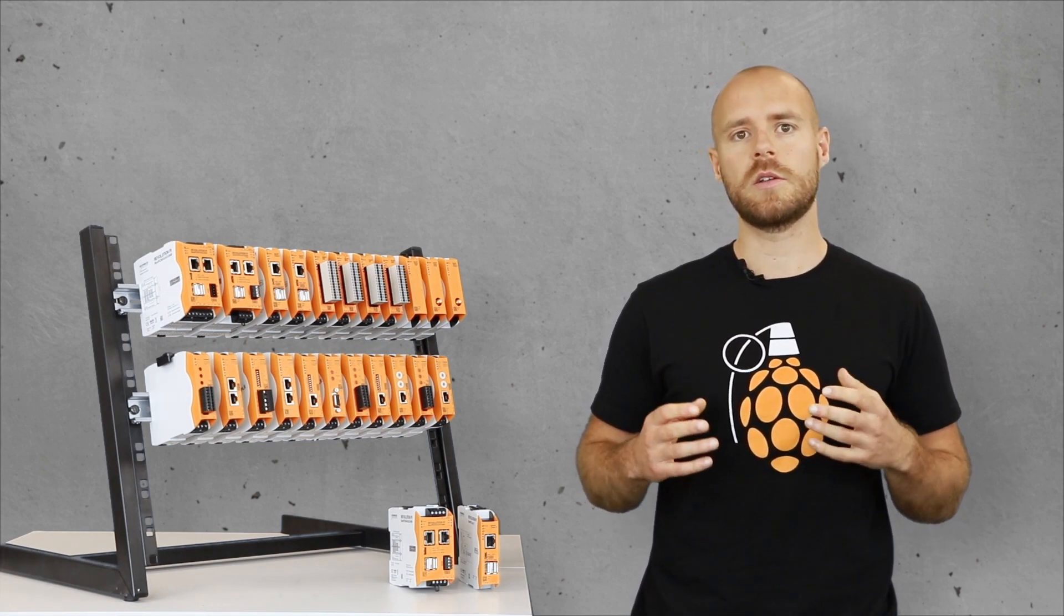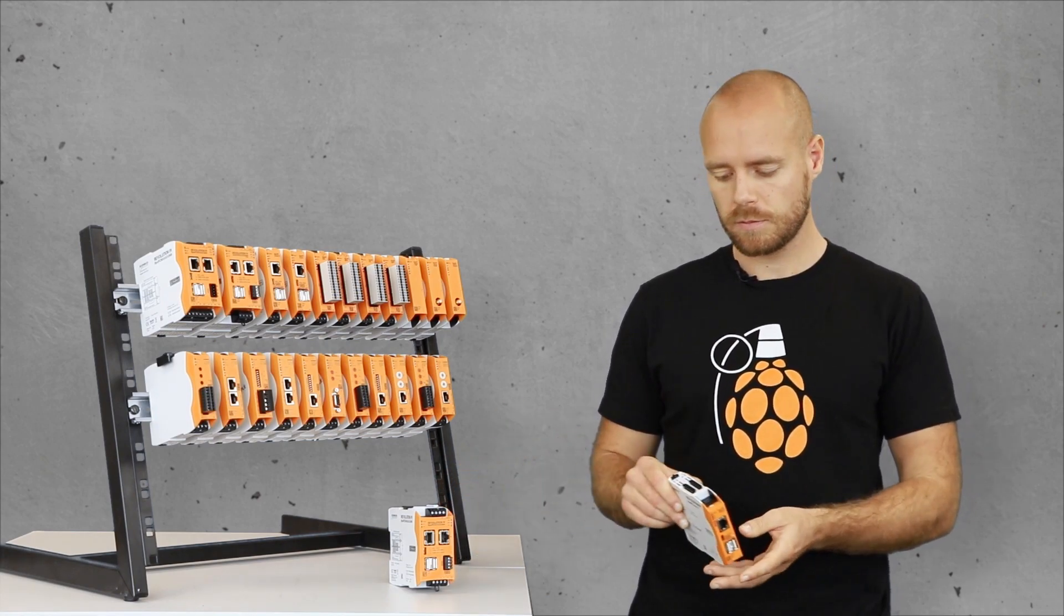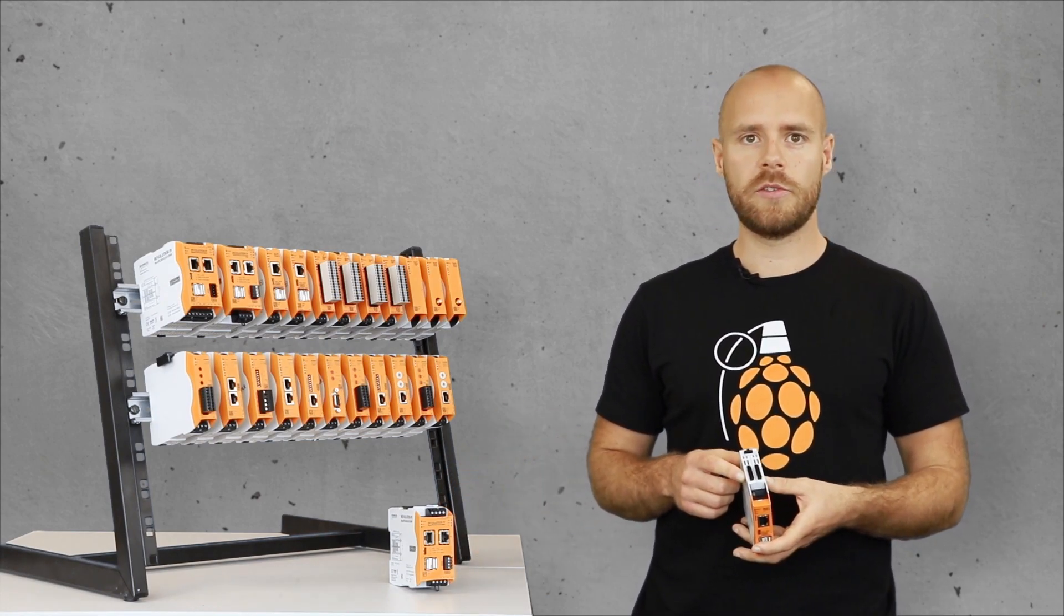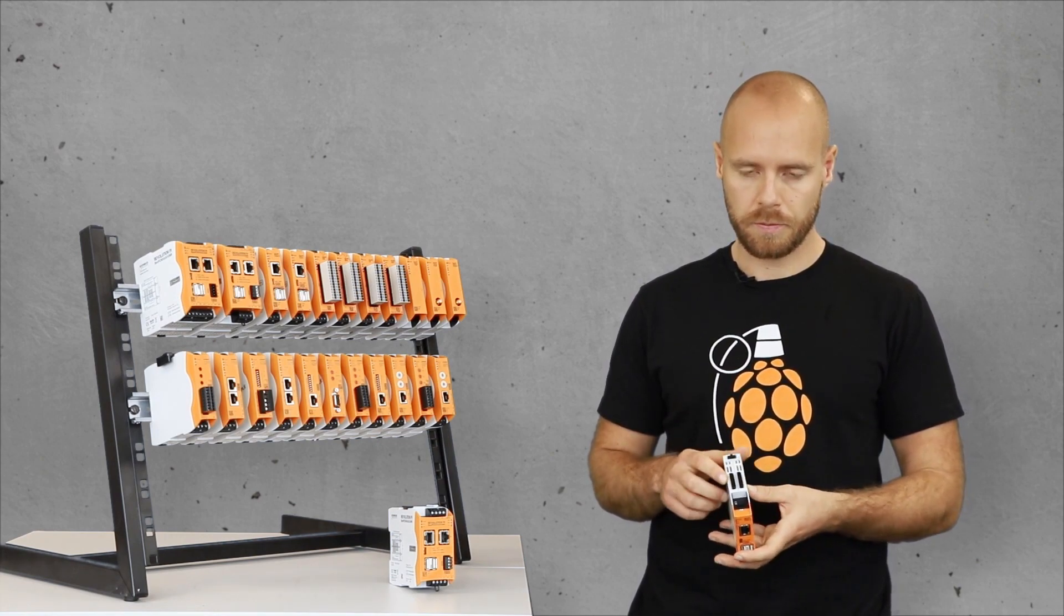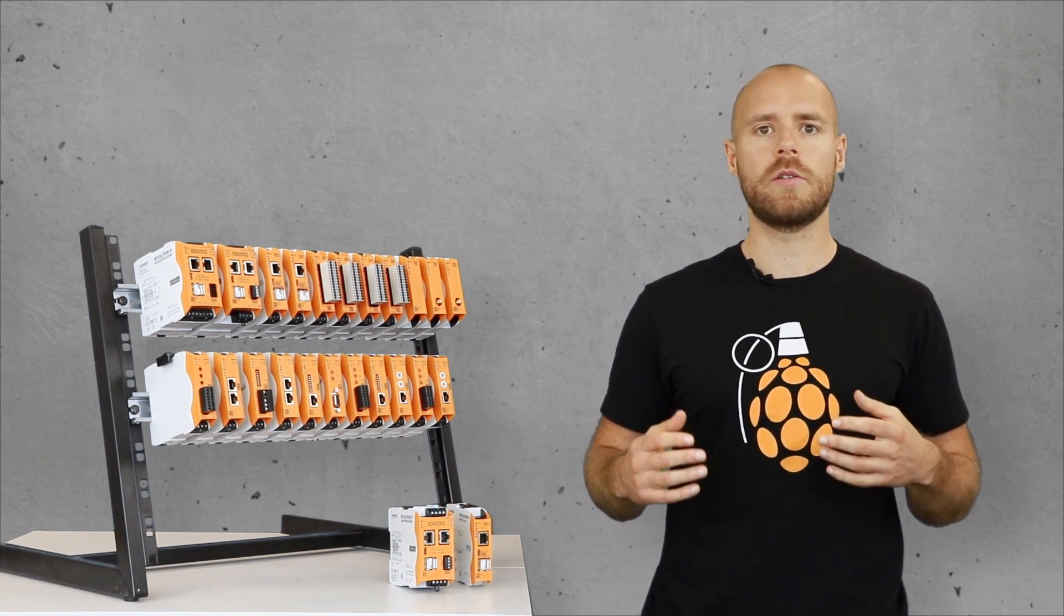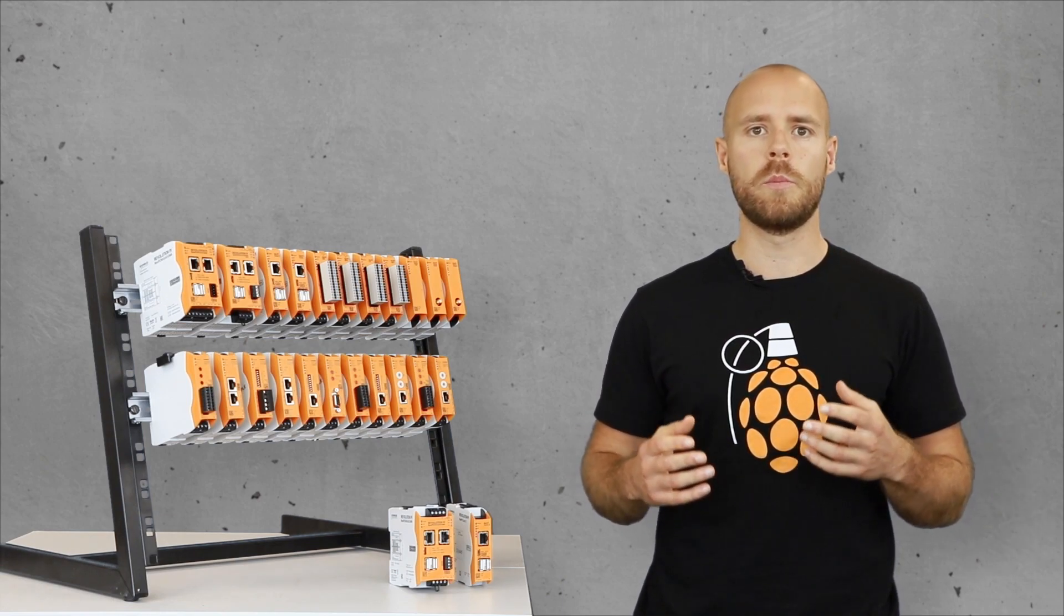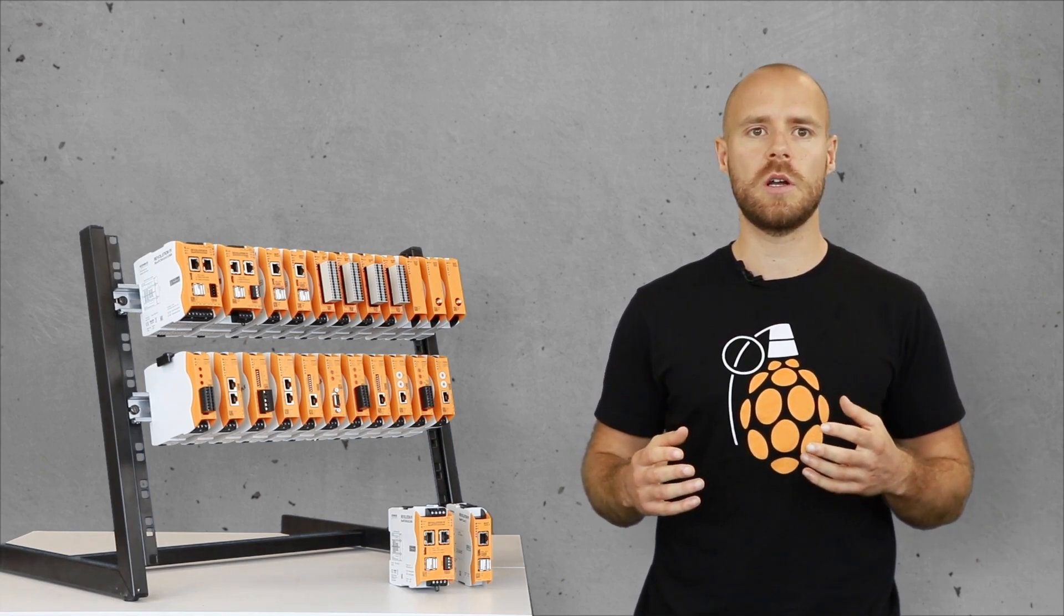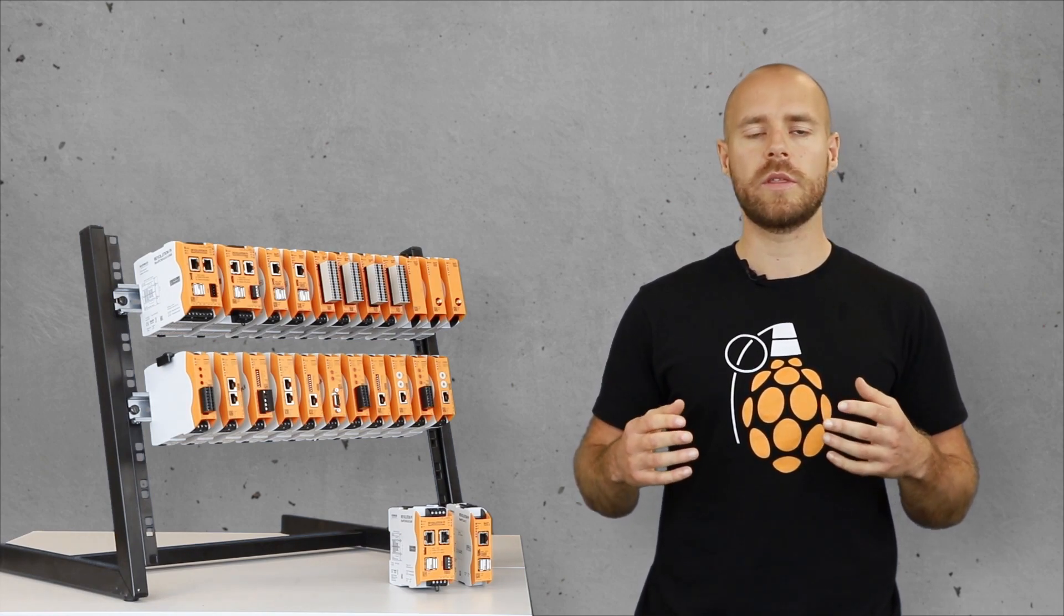So let's start with the RevPi Core. As you can see, the RevPi Core has two black colored sockets on the top. With these connections, we call this the Pi Bridge, we can equip the RevPi Core modules on both sides with digital and analog I/O modules as well with gateways.